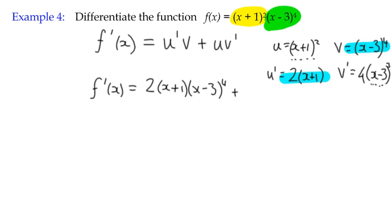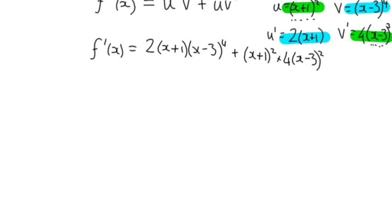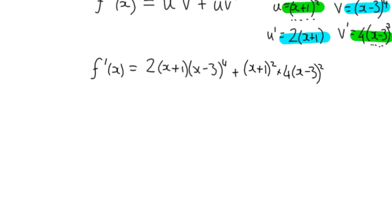We've got u' is 2(x + 1) multiplied by (x - 3)⁴, plus u times v', or the derivative of v. So we've got (x + 1)² multiplied by 4... Now you might want to put the 4 straight away at the beginning of that term, or you could leave it to simplify it.